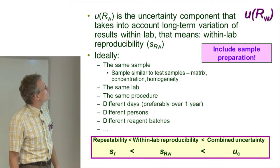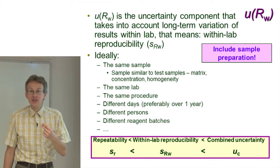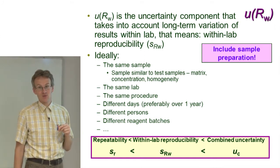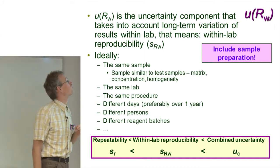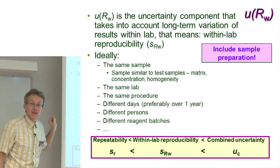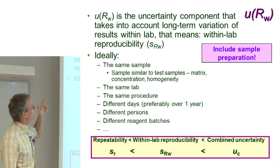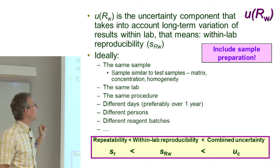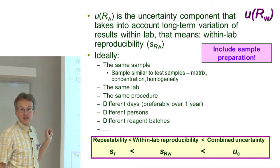We can now look in more detail at how exactly we find the values of these uncertainty components. The URW takes into account long-term variation of results within laboratory and is measured in such a way